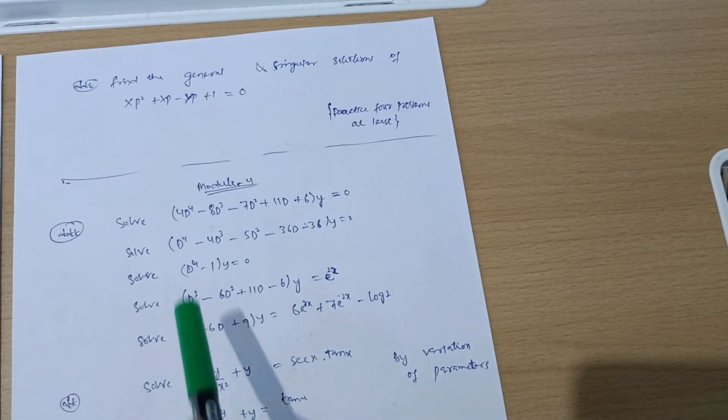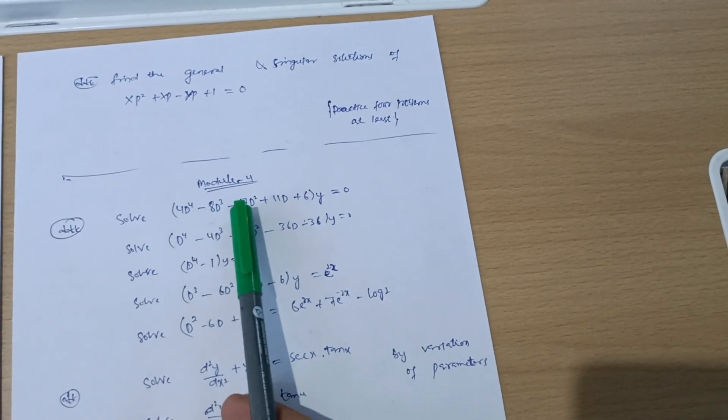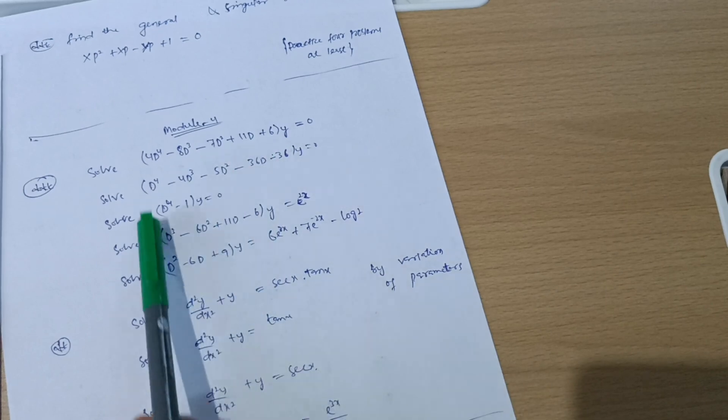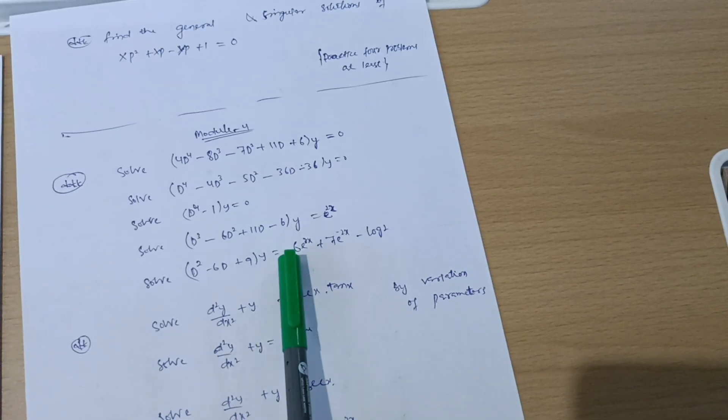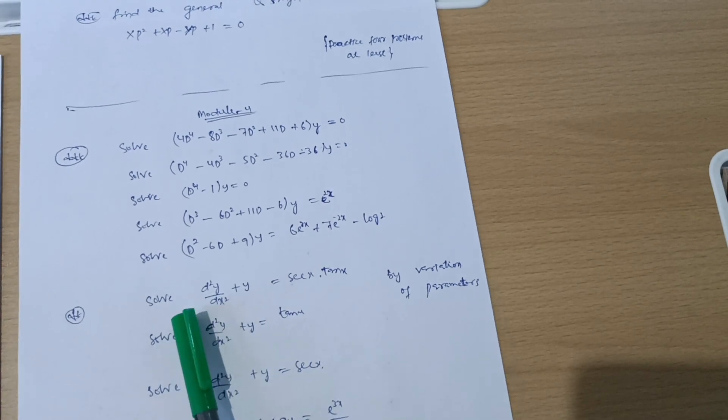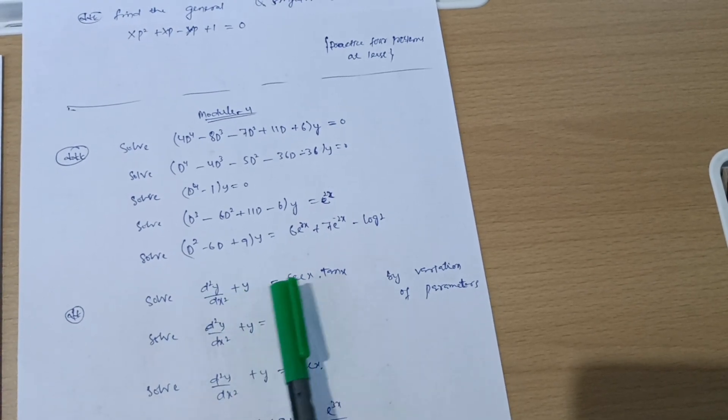See here: solve (4D⁴ - 8D³ - 7D² + 11D + 6)y = 0. Likewise, these questions will appear in the examination and you should be good in the higher order differentials.